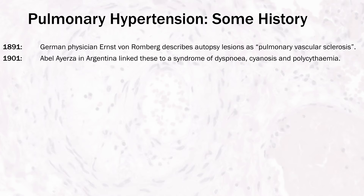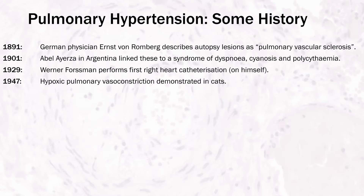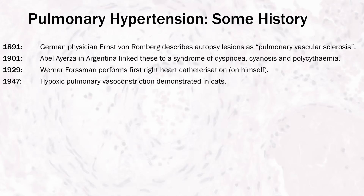In 1921, German physician Werner Forsmann performed the first right heart catheterization on himself, proving that the procedure could be performed safely. Dickinson Richards and André Kennard further refined his technique, and the three shared a Nobel Prize in 1956. The ability to invasively measure hemodynamic parameters led to a flurry of breakthroughs in physiology. In 1947, hypoxic pulmonary vasoconstriction was demonstrated for the first time in cats.